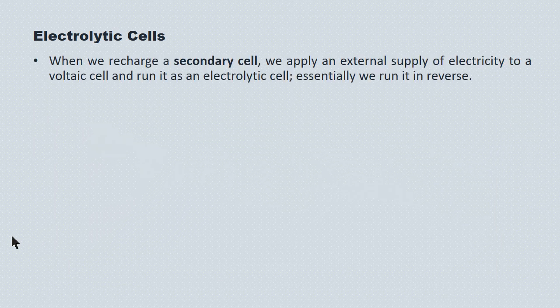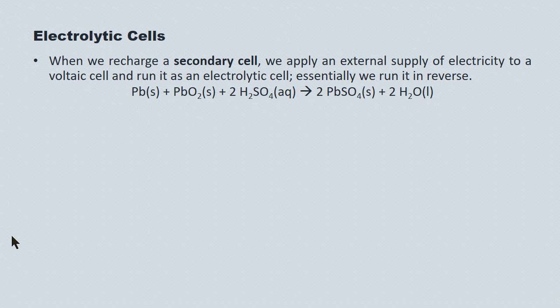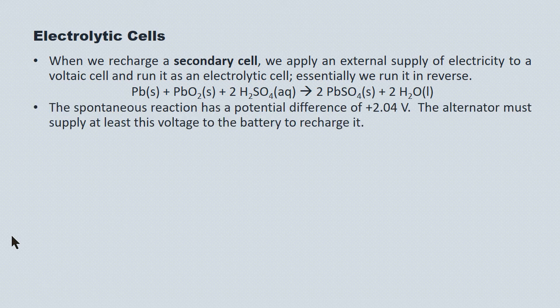When we recharge a secondary cell, we apply an external supply of electricity to it and run it as an electrolytic cell — essentially we run it in reverse. Here's the reaction for your car battery operating as a voltaic cell, supplying an electric current to your car's systems. It's a spontaneous reaction with a potential difference of positive 2.04 volts. There are six of these cells lined up in series, giving your car battery a 12-volt potential difference. When the alternator recharges the battery, it has to supply each cell with a minimum of 2.04 volts to recharge.